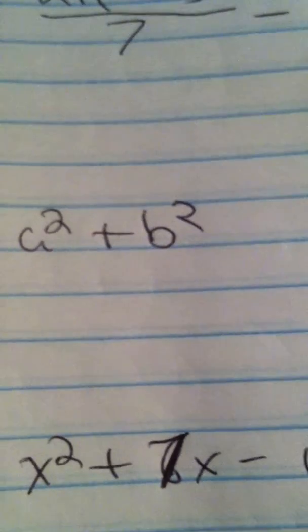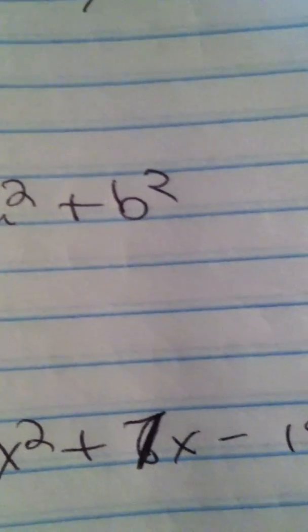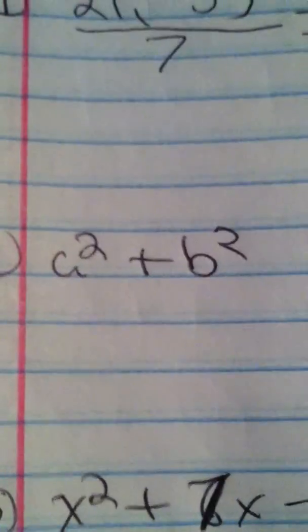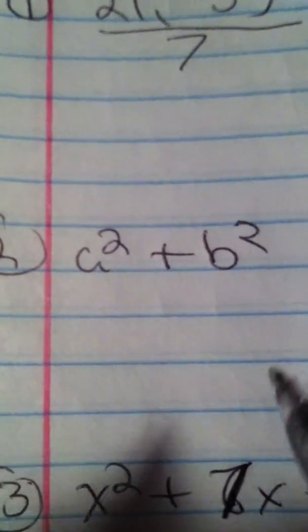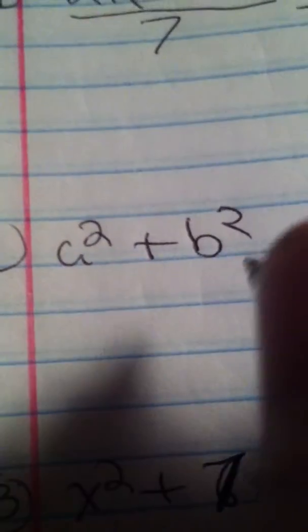For the difference between two perfect squares, that would be a² - b². What you would do for this is (a + b)(a - b).